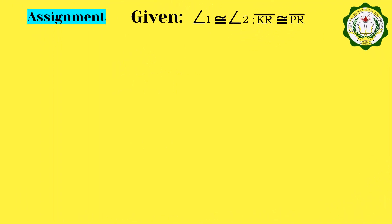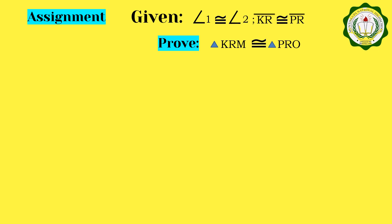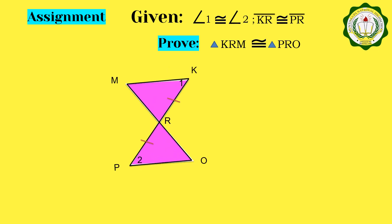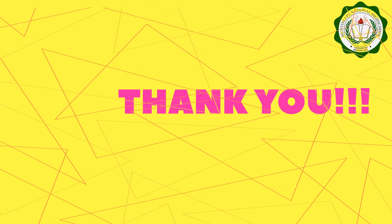For your assignment, you are given angle 1 congruent to angle 2 and segment KR congruent to segment PR, and you are asked to prove triangle KRM congruent to triangle PRO. You are to write a two-column proof, just like what we did in our activity. Thank you, and God bless. Hope you learned something.